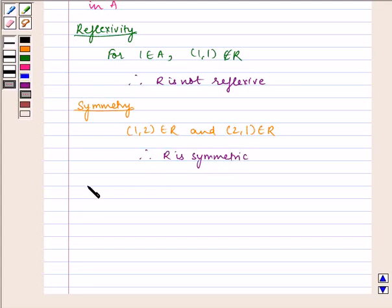Now let us check for transitivity. We have (1,2) ∈ R and (2,1) ∈ R.